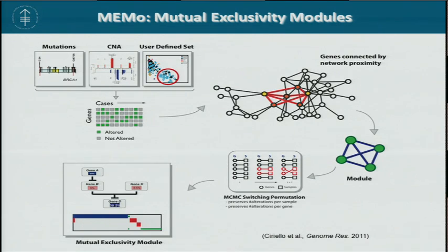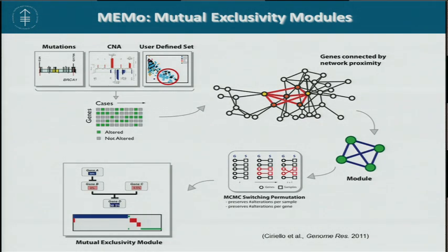After frequently altered genes have been detected, we connect them using a background network. All fully connected gene sets are extracted, and alterations affecting each gene set or module are tested for mutual exclusivity. Only modules whose set of alterations show a statistically significant trend towards mutual exclusivity are then output as a result.